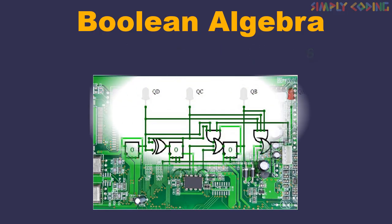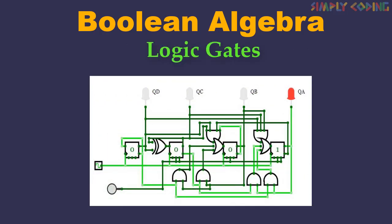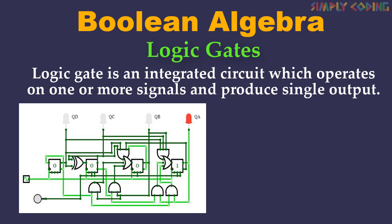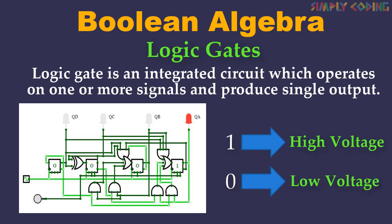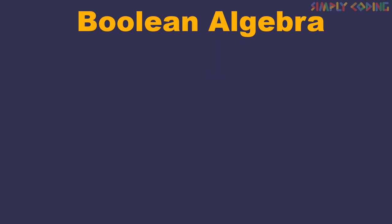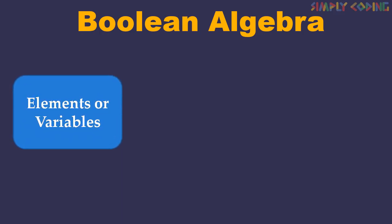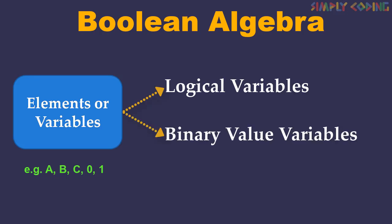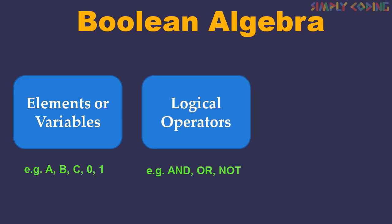At the basic level, circuits are made from logic gates. A logic gate is an integrated circuit which operates on one or more signals and produces a single output. Gates are digital circuits because the input and output signals are denoted by either one, which is high voltage, or zero, which is low voltage. Coming back to Boolean algebra, it is made up of elements which are variables or constants with a value of one or zero. Since they store only two values, they are also called logical variables or binary valued variables. Next are logical operators, which are AND, OR, and NOT.